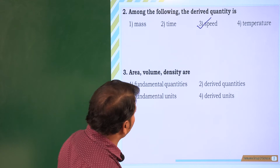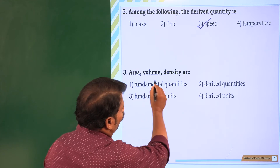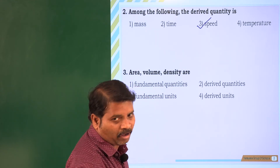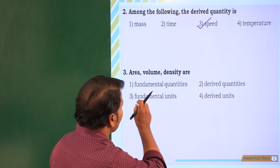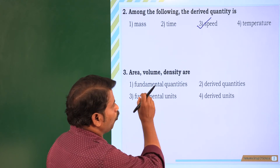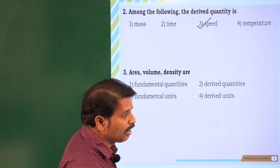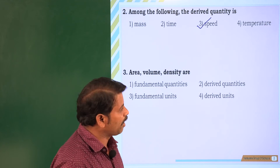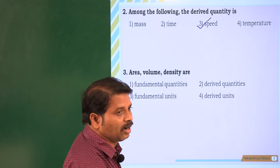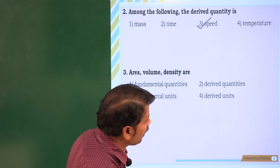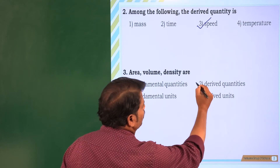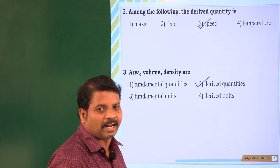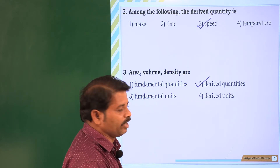Next, question 3: area, volume, density. Clearly, area, volume, and density depend on length and mass, which is why they are derived quantities. The second option is the correct answer — derived quantities.